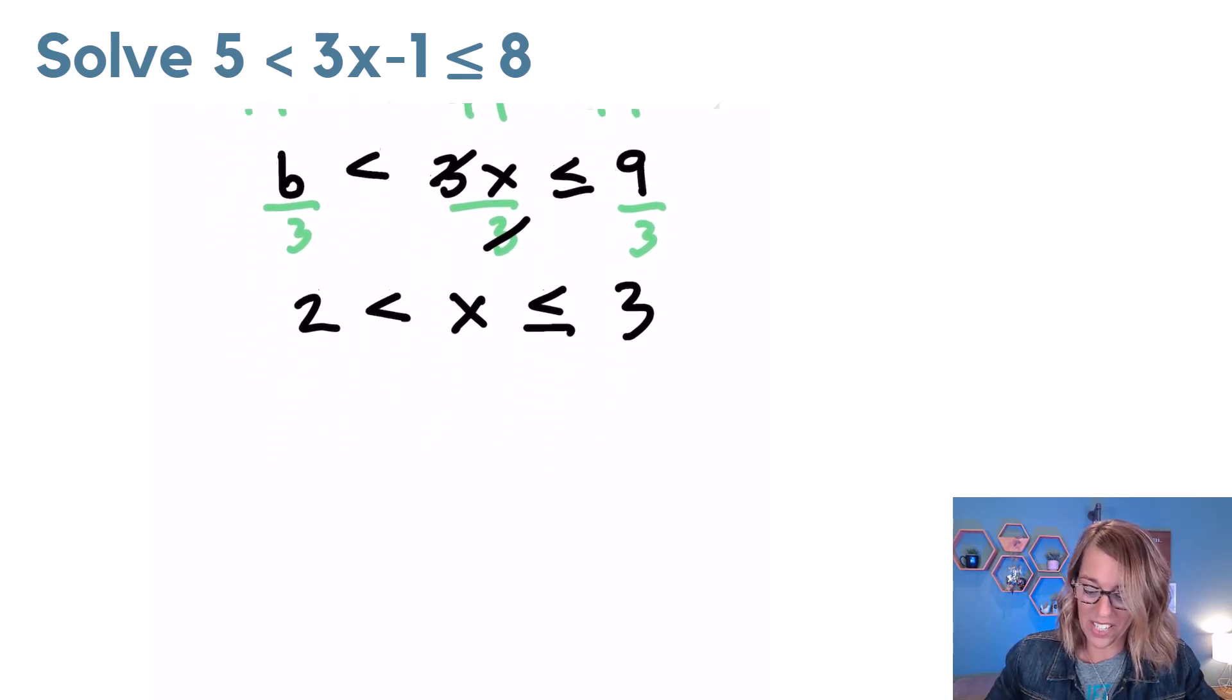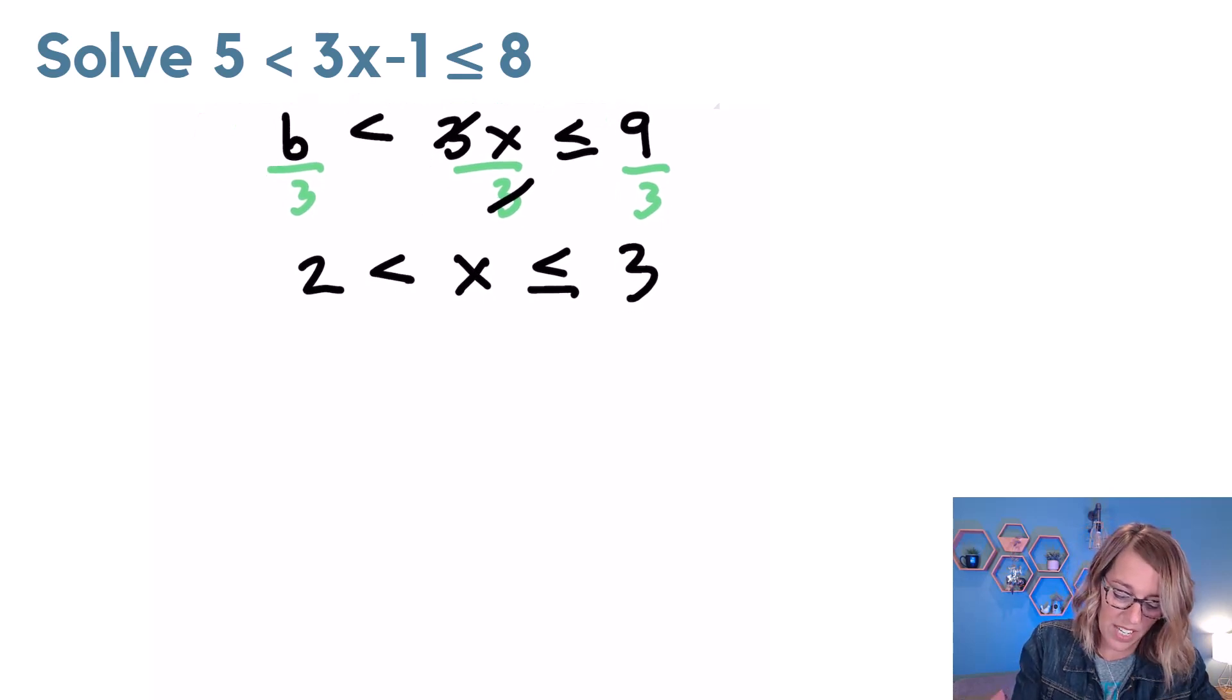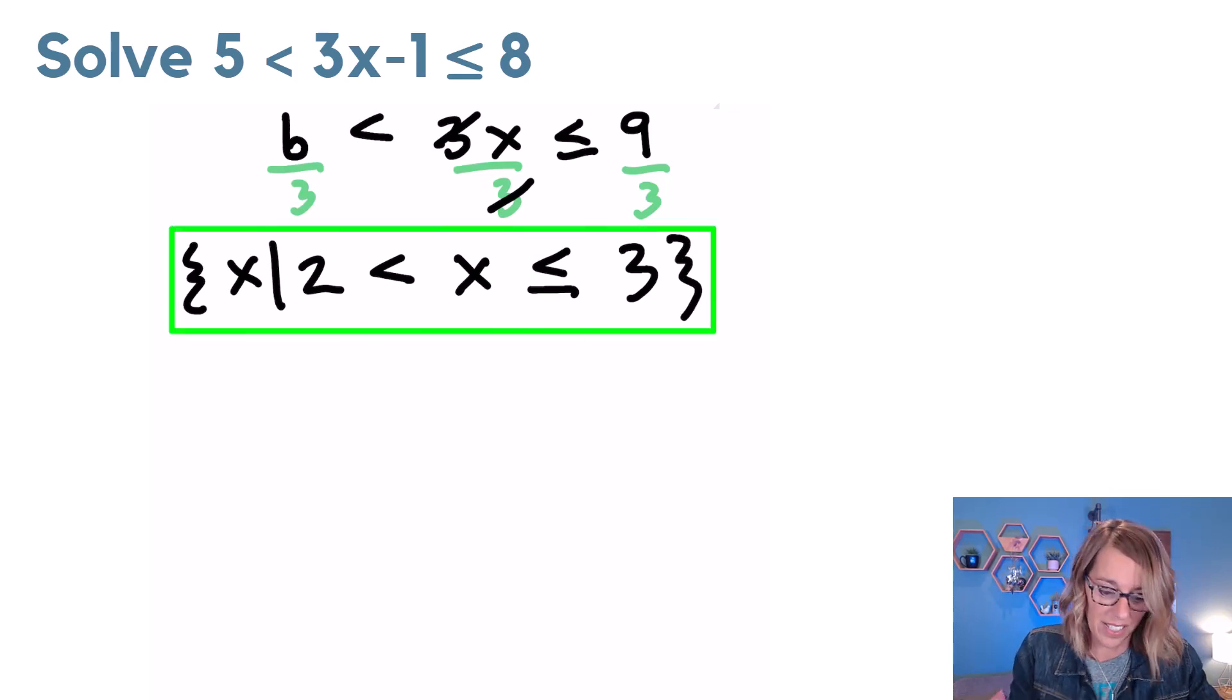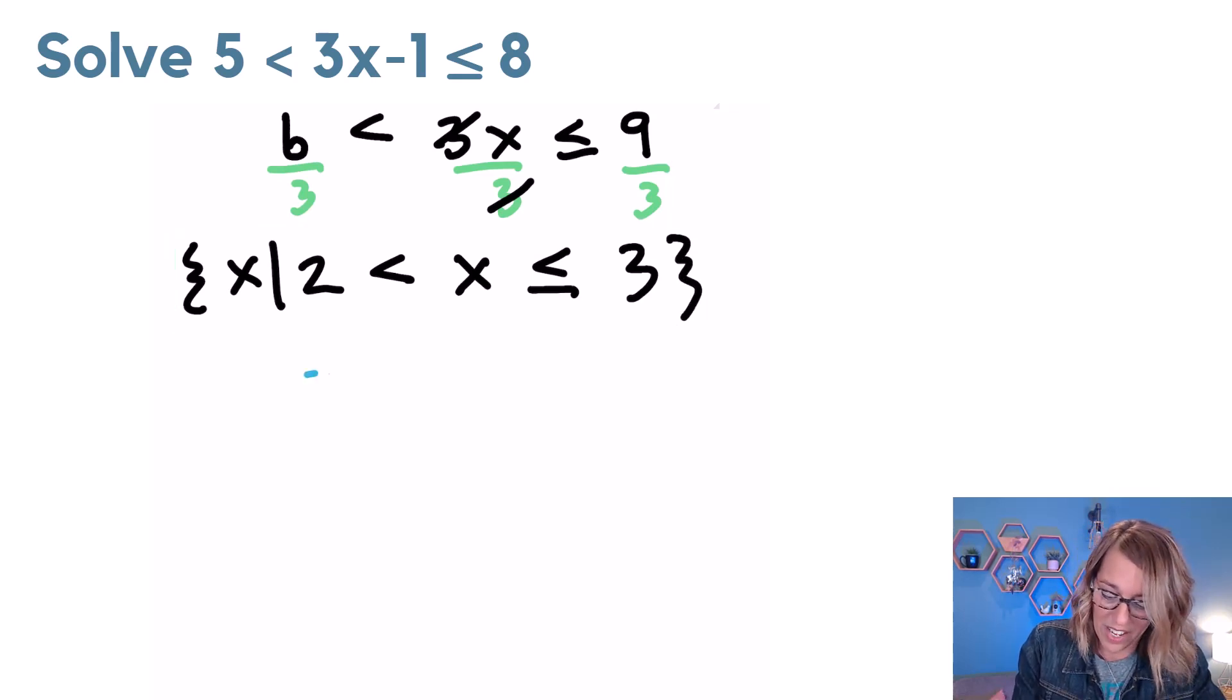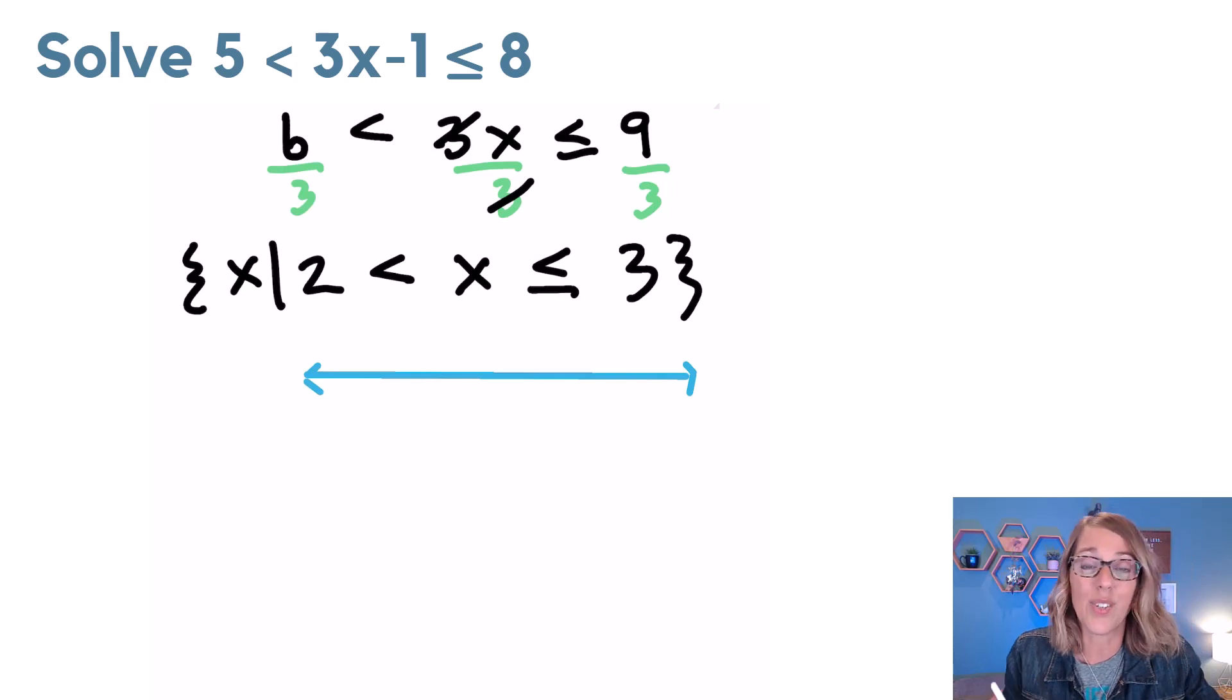Let's go ahead and express our solutions. I'm going to do set builder because it's so darn easy, the set of all x's such that, and then close that with a set bracket. Let's also put this on the number line, I'm just going to use the notation with the parenthesis and the square brackets. But you could definitely use the circles open and closed.